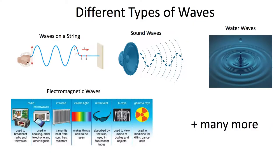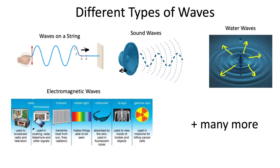Waves come in various flavors. This slide here illustrates just a few of the more common waves we can encounter in everyday life. For example, if you grab the end of a string and move your hand up and down, you can generate a wave that propagates down that string. Anytime you listen to music or talk, the speaker moves in and out, creating a vibration in the air that propagates as a wave. If you drop a stone in a pond, that generates a ripple — a wave in water that propagates outwards. There are electromagnetic waves, which play a critical role in our lives — used in radio broadcasting, microwave ovens, and cellular devices.